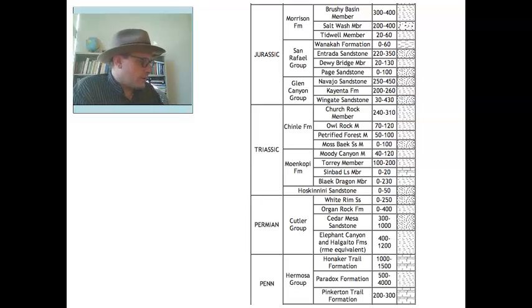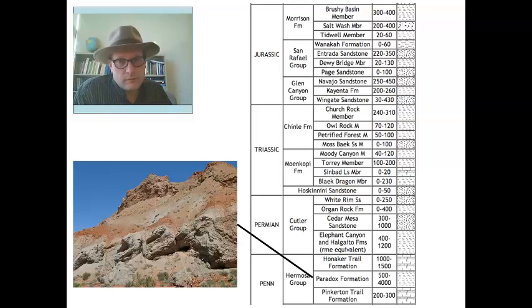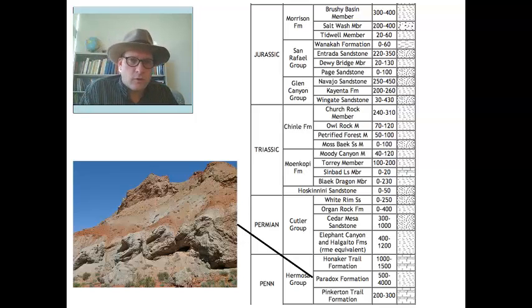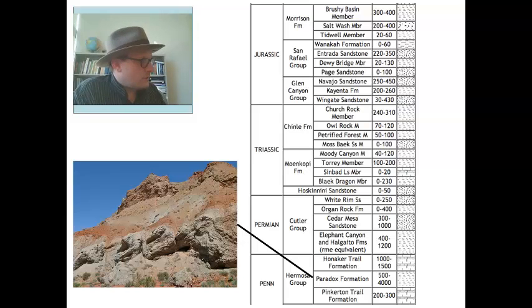Now I'm going to go through the various stratigraphic units exposed within the Paradox Basin. The first unit is the Paradox Formation itself, which is not exposed in very many places in Utah. The best place to see outcrops of the Paradox Formation is in the Owl Creek Dome, sort of north of Moab, though there are some other outcrops to the south. The Paradox Formation is very unique because it is full of evaporitic deposits, including halite salts, anhydrite, and gypsum beds.